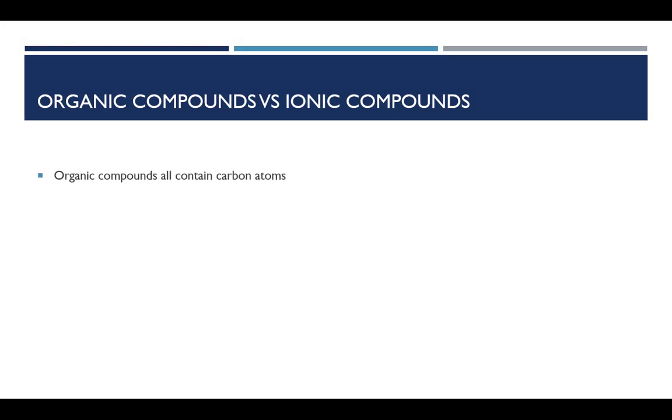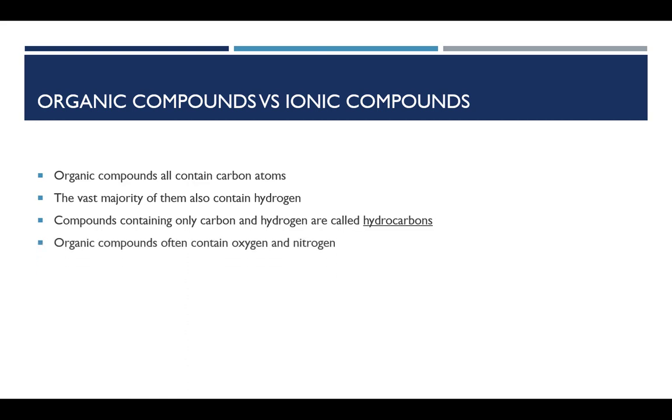By definition, organic compounds all are based on carbon. So they will all contain carbon atoms, and essentially all of the organic compounds that you will encounter also contain hydrogen. Compounds that contain only these two elements are called hydrocarbons, and alkanes will fall under that category. Organic compounds very frequently contain oxygen, as well as nitrogen. Many of them contain halogens, especially chlorine, bromine, and iodine. Fluorine is less common. And some organic compounds contain sulfur, as well as some other elements.